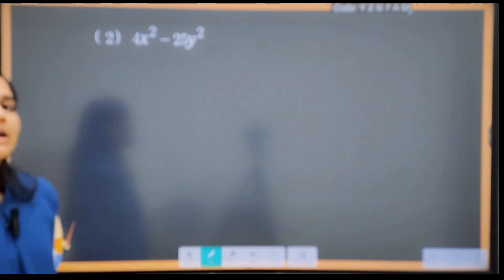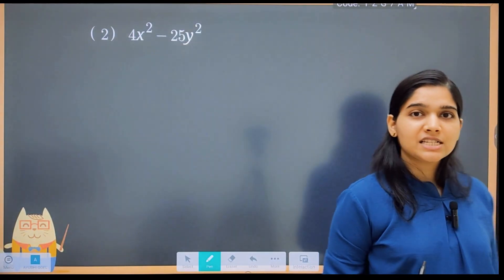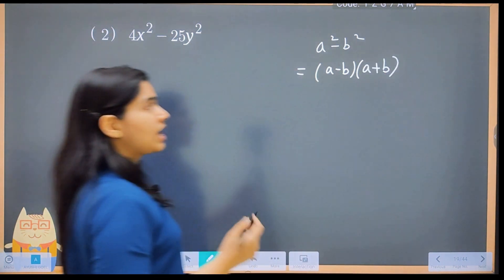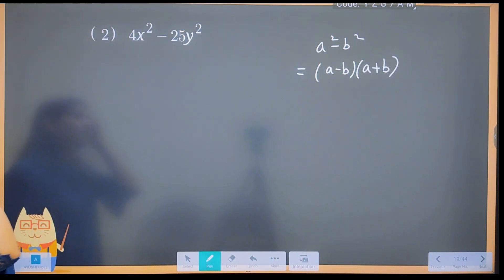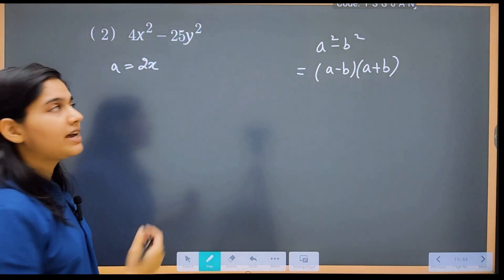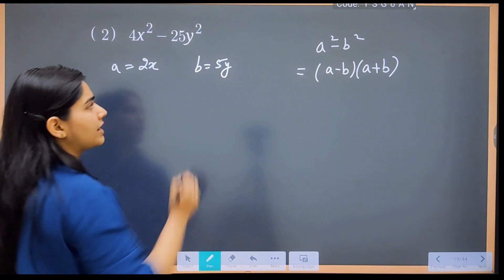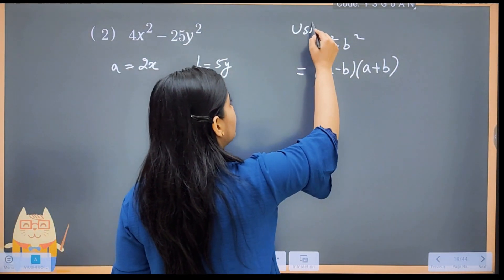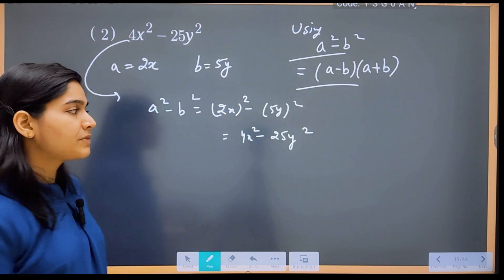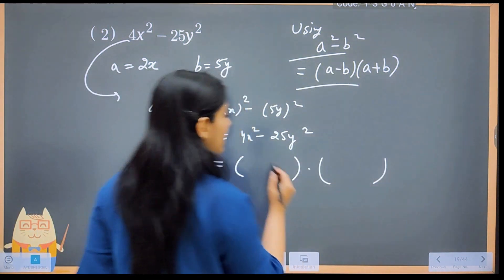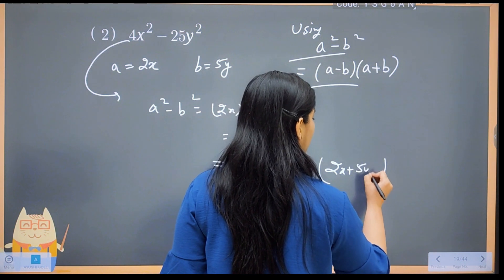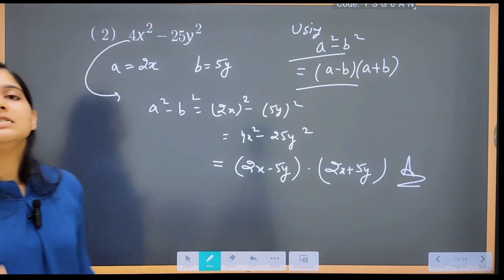Next: factorize 4x² − 25y². This is clearly in the a² − b² form. We know a² − b² = (a−b)(a+b). Here, 4x² = (2x)² so a = 2x, and 25y² = (5y)² so b = 5y. Therefore 4x² − 25y² = (2x − 5y)(2x + 5y). Very simple identity!